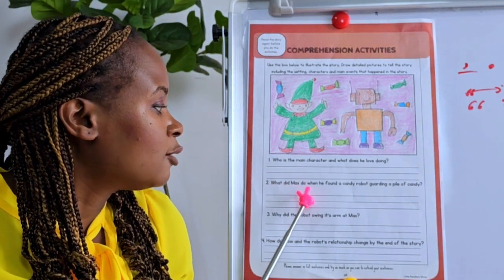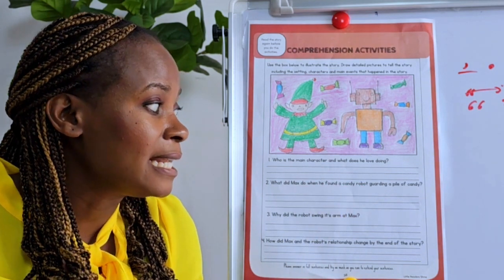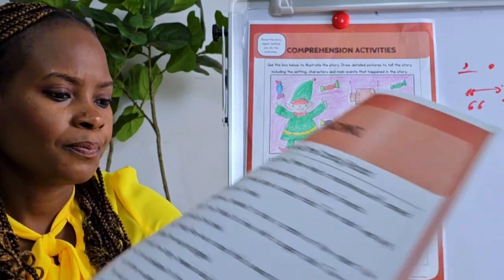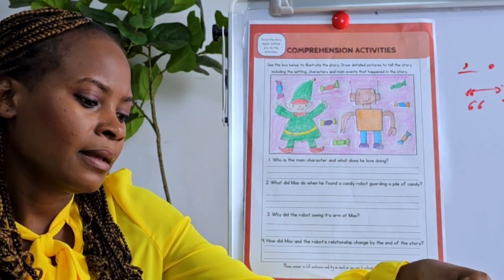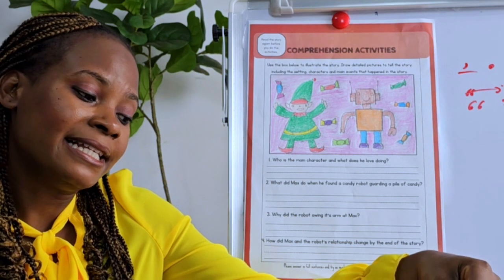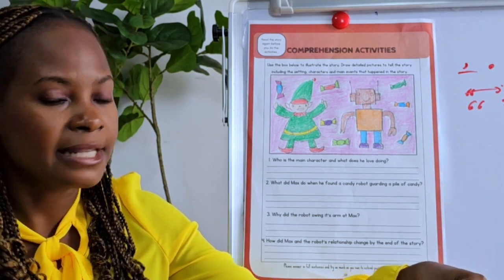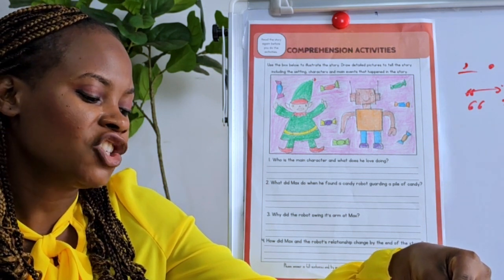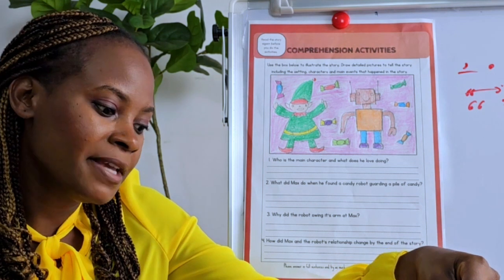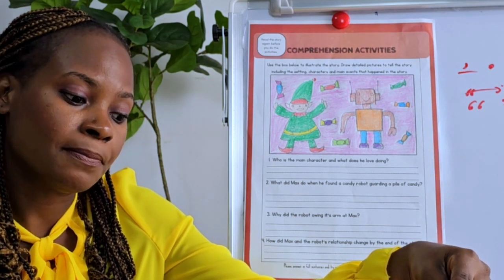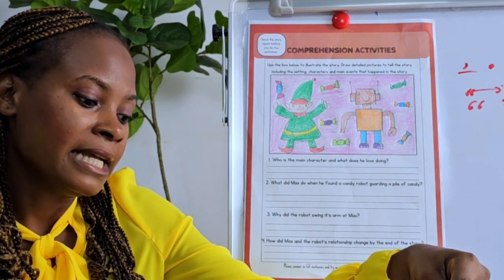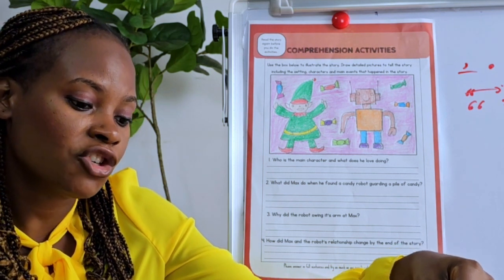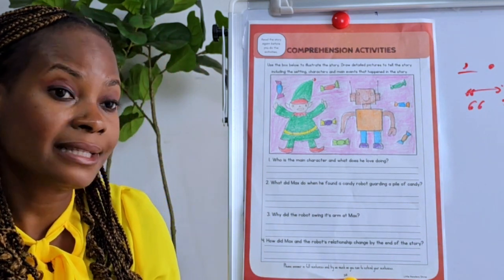What did Max do when he found a candy robot guarding a pile of candy? Let's go back to the story. 'One sunny day Max stumbled upon a candy robot' — that means he came across a candy robot. The robot was big and shiny, guarding a pile of candy. Max, being mischievous, decided to play a prank on the robot. He sneaked behind it and tickled its feet with a sugar stick.